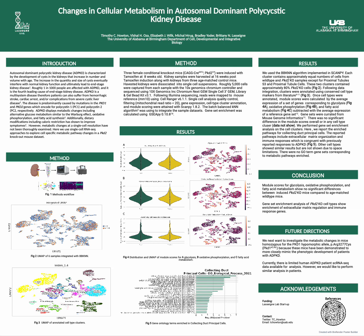The batch balanced KNN algorithm was used to integrate the data sets, and gene set enrichment was calculated using GSEAPy. As a result of our analysis, we found 28 clusters and identified them using conserved markers from literature. Each cluster contained approximately an equal number of cells from wild type and PKD2 knockout samples.